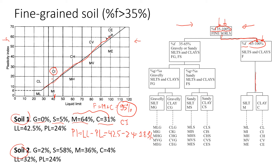The symbol for this soil is CI. There is only one option with CI in the flowchart, so the final answer for Soil 1 is CI — clay of intermediate plasticity.